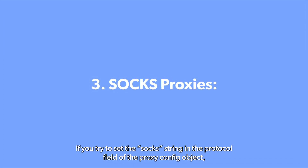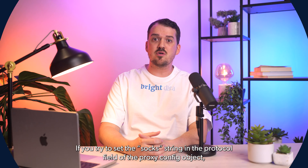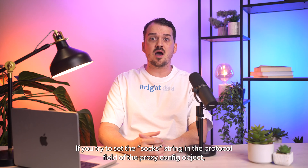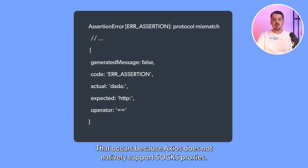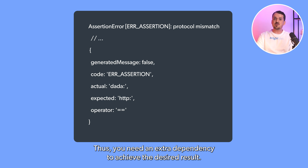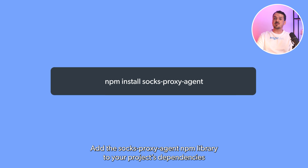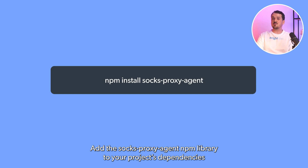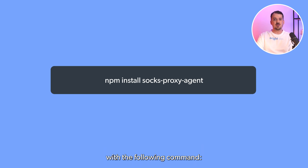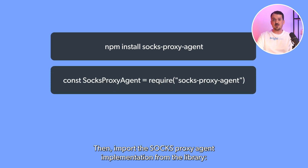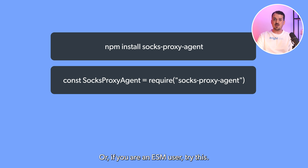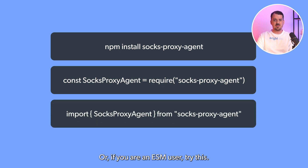SOCKS proxies. If you try to set up the SOCKS string in the protocol field in the proxy config object, you will get an error. That error occurs because Axios does not natively support SOCKS proxies. Thus, you need an extra dependency to achieve the desired result. Add the socks-proxy-agent NPM library to your project's dependencies with the following command. Then import the SOCKS proxy agent implementation from the library — or, if you are an ESM user, try this.